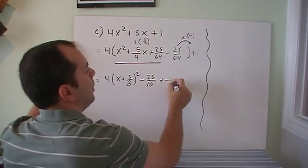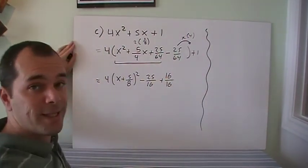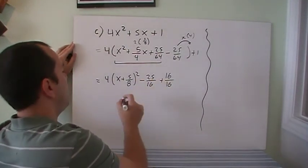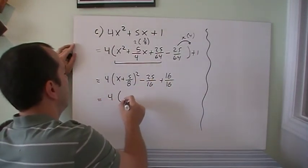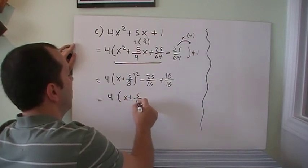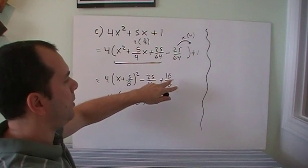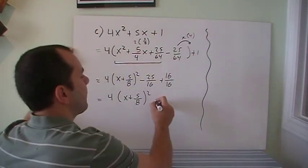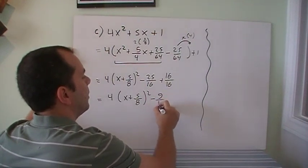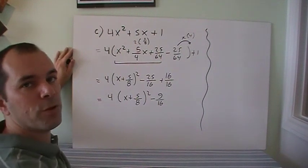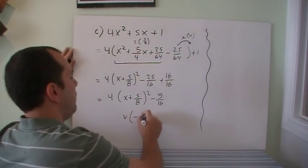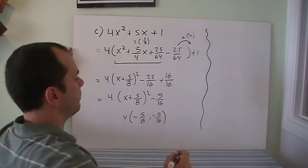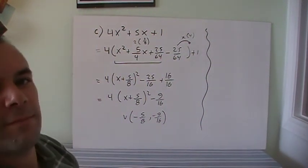And then plus 1. Well, I want to write something over 16. So that's 16 and 16. 25 minus, sorry, 16 minus 25. What's that? So it's 16 to get to 20 is 4, and plus 5, so it's 9. Minus 9 over 16. And that should be our answer. So therefore the vertex is negative 5 over 8 and negative 9 over 16.